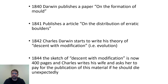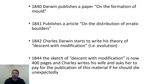Descent with modification is Darwin's term for evolution. It wasn't until he read Alfred Russel Wallace's work that he started using the term natural selection — that term is actually Wallace's. We give both men credit for the theory of evolution, but Darwin had much more evidence. He wrote about natural selection — nature selecting the organism best suited — well before Wallace did, and that's why he gets most of the credit.